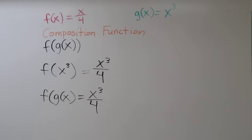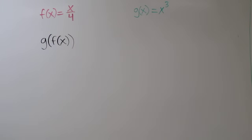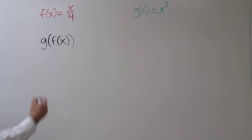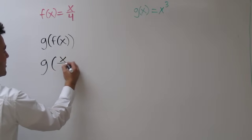Let's look at a different function. Here we have g of f of x. We have our same f and g to start with, but this time we're looking at f of x first. f of x is x over 4. So we could rewrite this as g of x over 4.